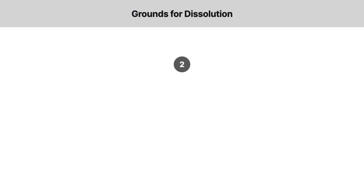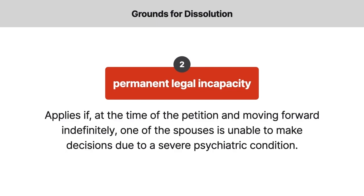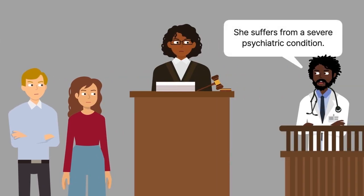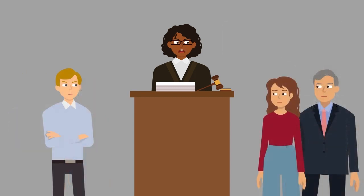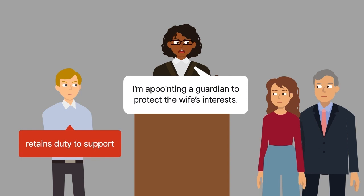The second, rarer ground for dissolution is permanent legal incapacity. It applies if, at the time of the petition and moving forward indefinitely, one of the spouses is unable to make decisions due to a severe psychiatric condition. Medical and psychiatric testimony are required to demonstrate the condition's existence and effect. A non-spouse guardian or conservator will be appointed to represent the incapacitated spouse's interest in the dissolution proceeding, and dissolution doesn't terminate the capable spouse's duty to support the incapacitated spouse.